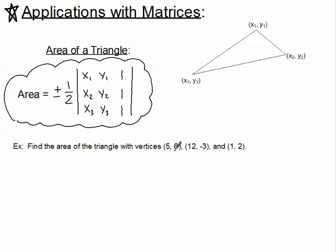If we look at our first example, I'm given these three ordered pairs. I'm just going to plug right into our formula. So area is equal to plus or minus one-half, and let's put our 3 by 3 determinant. I'm just going to choose to put the ordered pairs in order how they're given in the problem. So 5, 6, 12, negative 3, 1, 2. Again, our formula states that we just fill the final column with 1s.